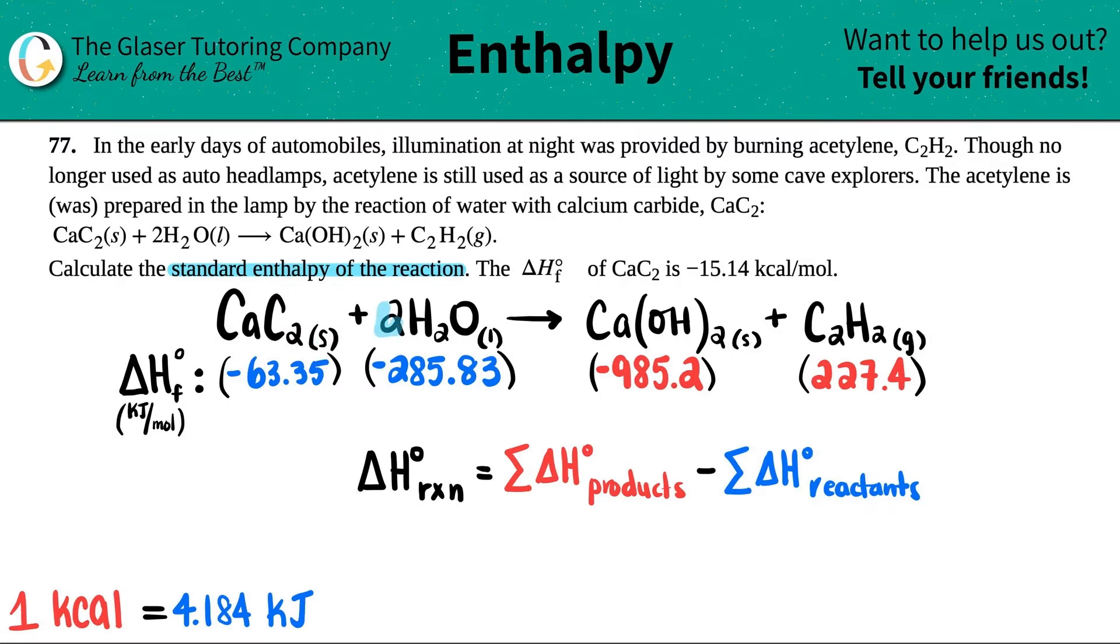Now, I already see that they gave us coefficients, like there's a 2 here, so I'm going to assume that this equation is balanced, but just always make sure that it's balanced. So I have 1 CAC2, so I just multiply that by 1. There was 2 H2Os, so I multiply this number by 2.